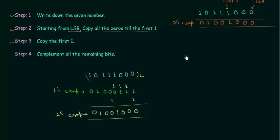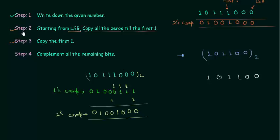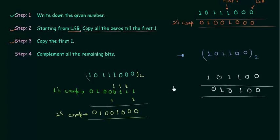I will solve one more example using the shortcut method. The binary number is 1 0 1 1 0 0 and we want the 2's complement. Step 1: write down the given number: 1 0 1 1 0 0. Step 2: start from LSB and copy all the 0's till the first 1 — this is the LSB and this is the first 1, so we have 2 zeros. Step 3: copy the first 1. Step 4: complement all the remaining bits — 1 0 1 becomes 0 1 0. So this is the 2's complement of this binary number.